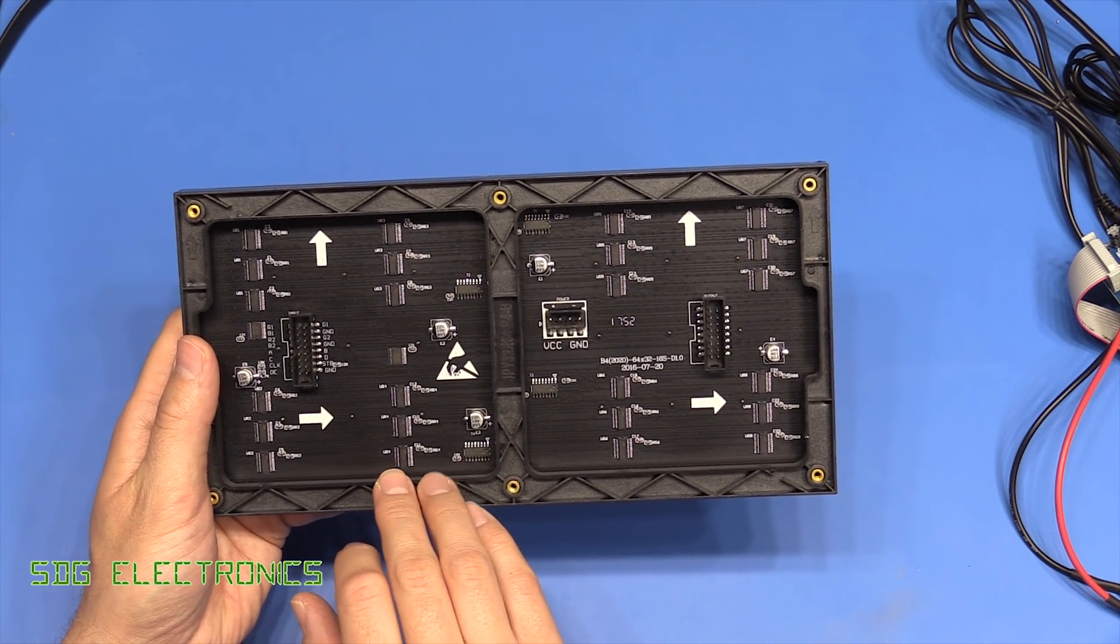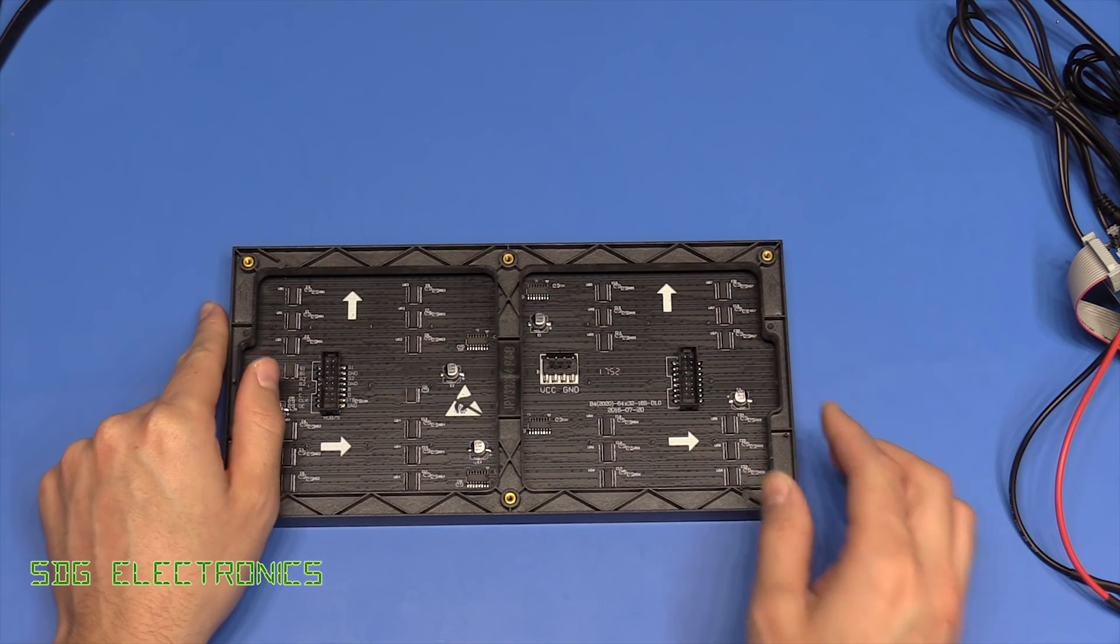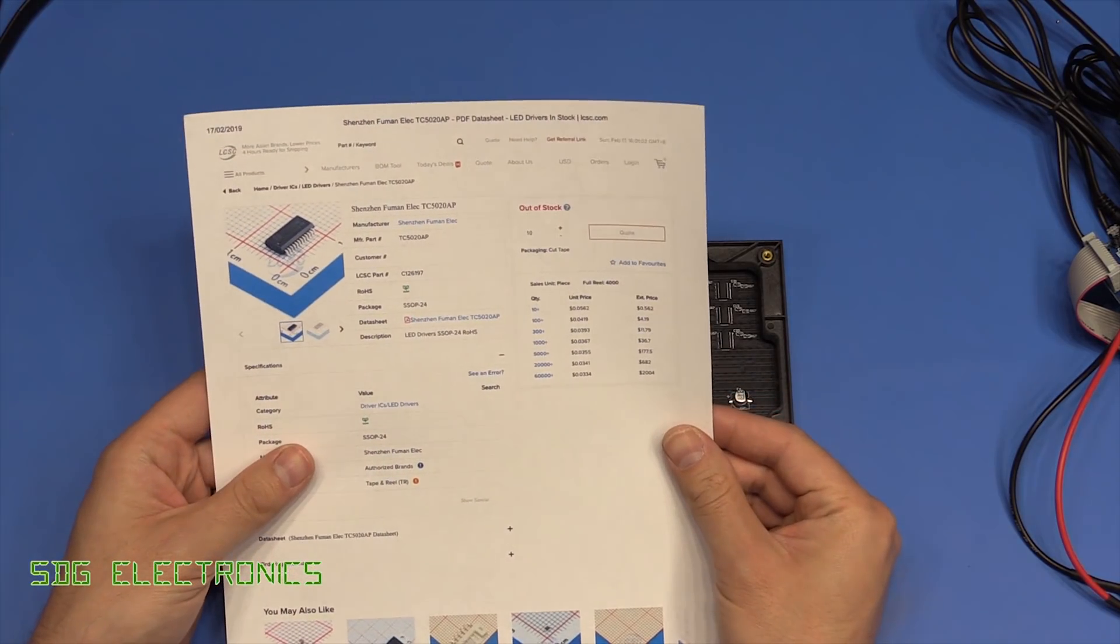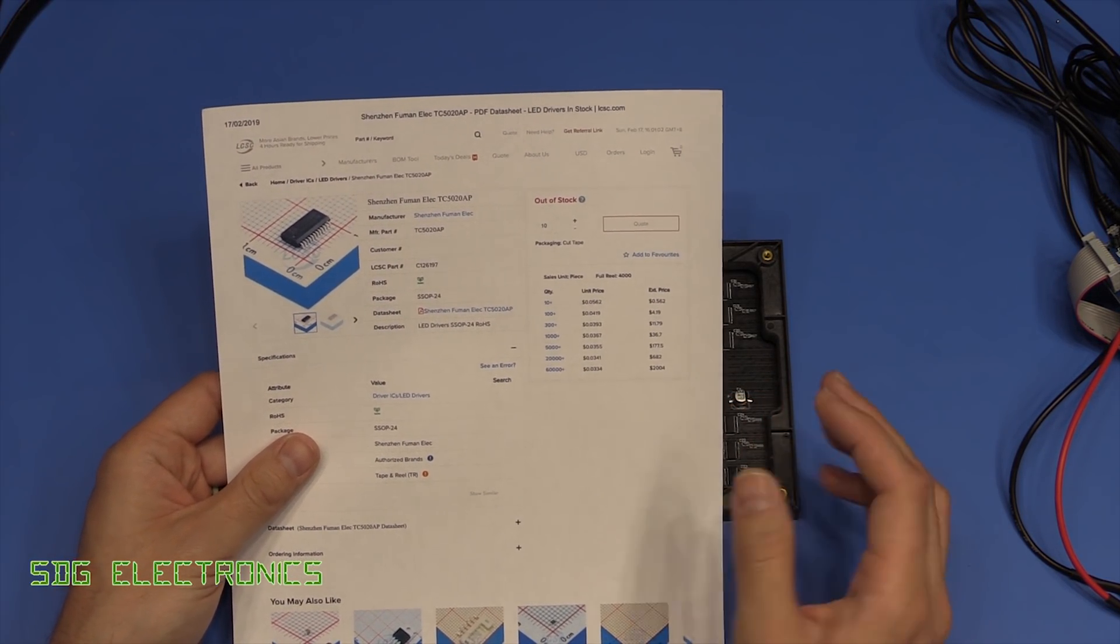The display itself is quite interesting. They're all individually controlled RGB LEDs and on the back there's some shift registers and then there's some shift registers combined with constant current LED drivers. So what they are are these TC5020AP LED drivers.